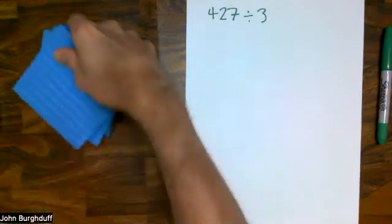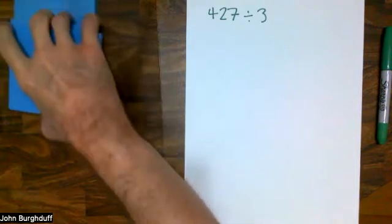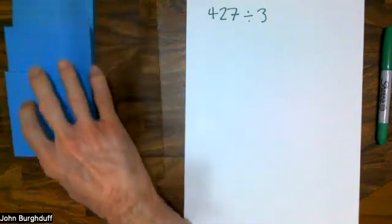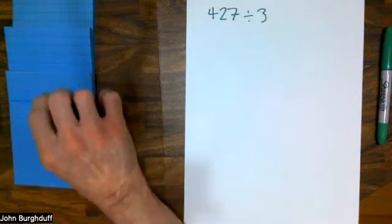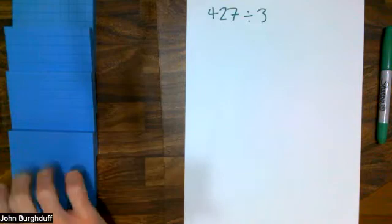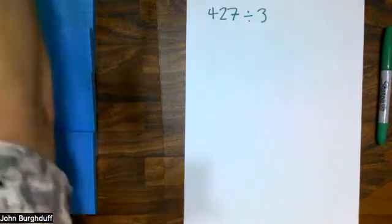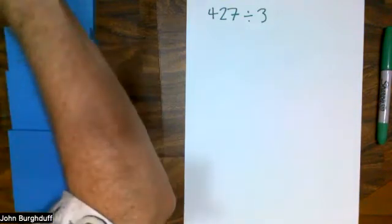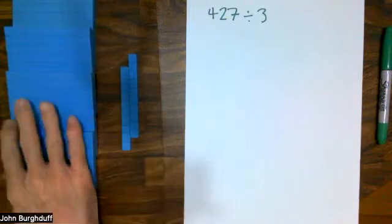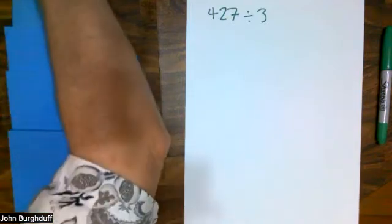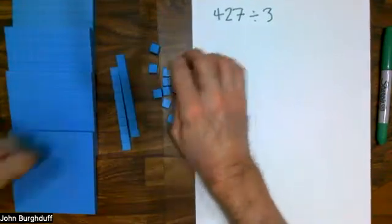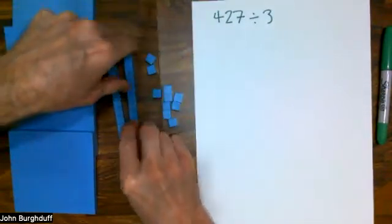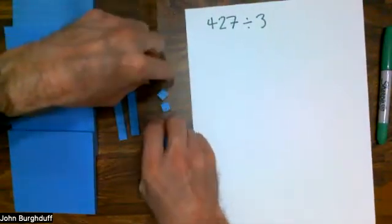This is a tool we've seen before, and I'm going to represent 427 that way. 427 would require four flats — remember, a flat is 10 units by 10 units, so 100 units in a flat. Two longs — there are 10 units in a long — and then seven individual units to get up to 427.